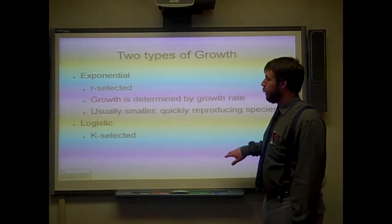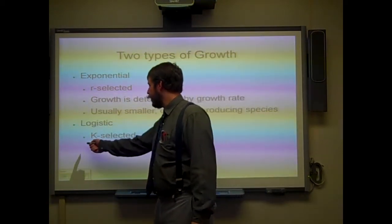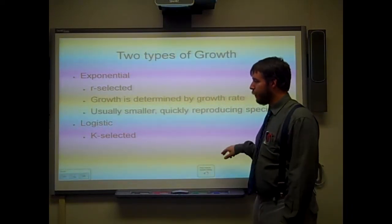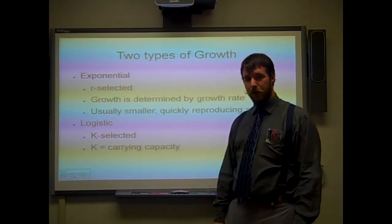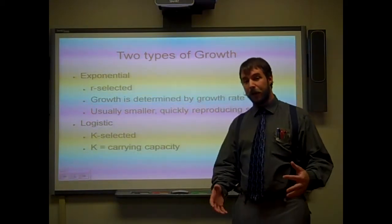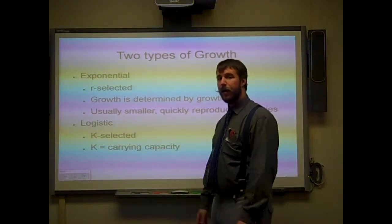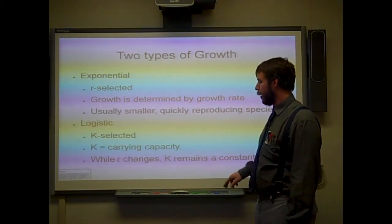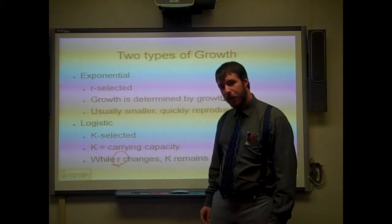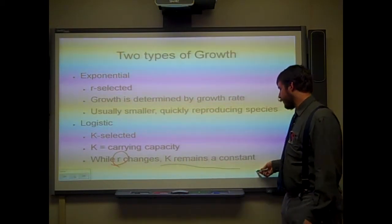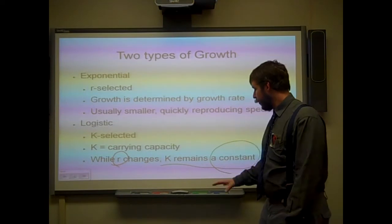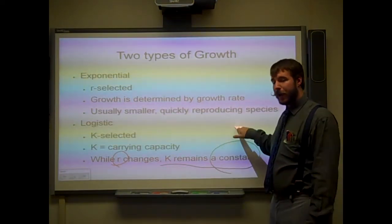Logistic growth is the other type of growth model, and this is called K-selected — it's important that the K is capital. With the capital K, that variable actually stands for the carrying capacity. It's essentially a constant in the equation where K is the carrying capacity — that's the largest the population can ever really be, how many can be carried by that ecosystem. That's why we call it the carrying capacity. With logistic growth, r can change — the rate of growth can change — however, the K will remain a constant, meaning the carrying capacity will not change. So even though r could be variable, the population can only ever reach a specific size, limited by the carrying capacity.